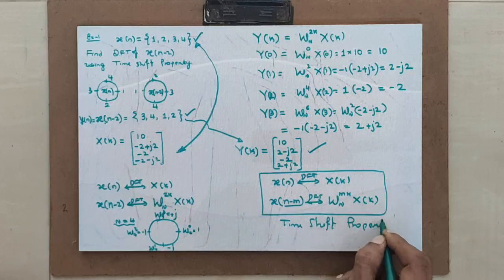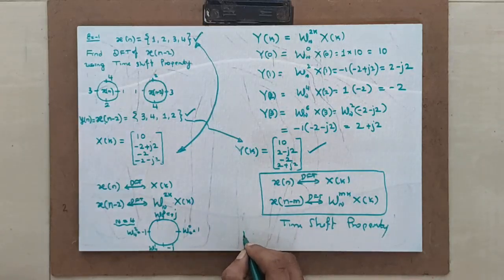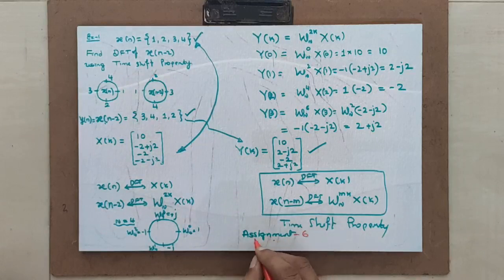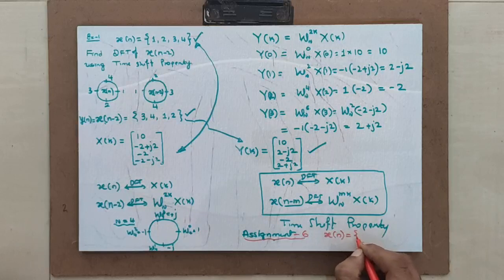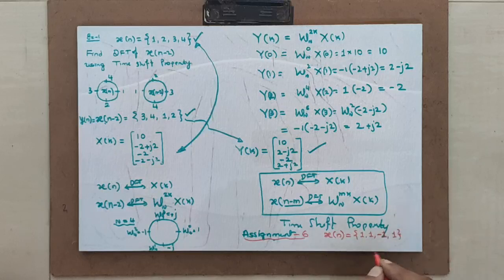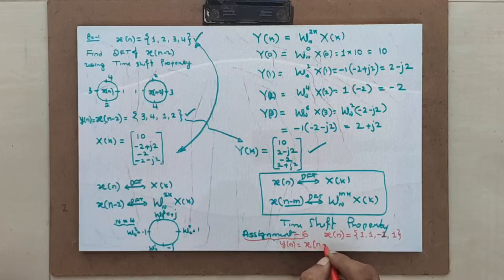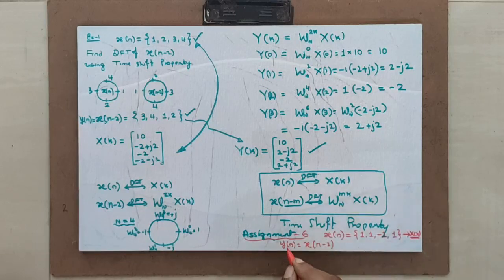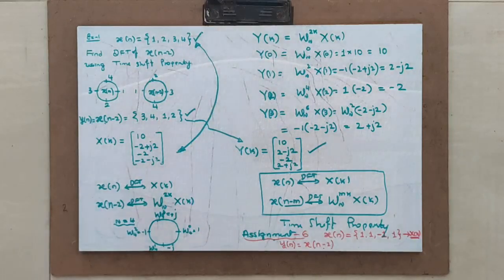I will give an assignment. For x(n) = {1, 1, -1, 1}, find the DFT of the new signal y(n) = x(n-2). First, find x(k) from x(n), then use x(k) to find y(k) using the time shifting property. Please solve this and post it in your group — let me see how many of you will try this example.